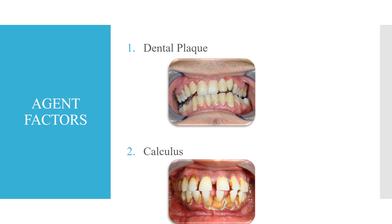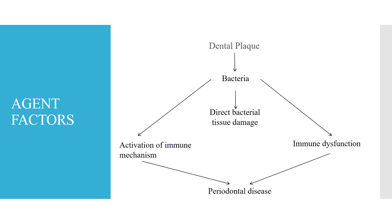Coming to agent factors: first is dental plaque, second is calculus. The flowchart is as follows: dental plaque contains bacteria, which directly act on tissue causing tissue damage. This bacteria also activates the immune mechanism, and due to that immune activity there is loss of tissue, leading to periodontal disease. Bacteria-immune dysfunction — healthy bacteria that support periodontal health may become dysfunctional, also leading to periodontal disease.